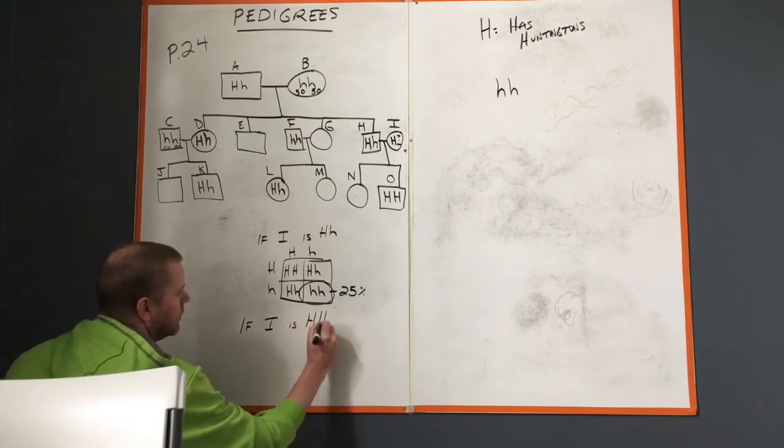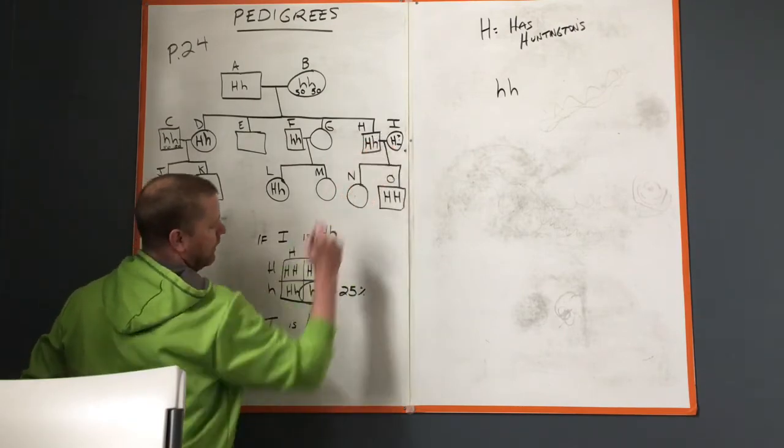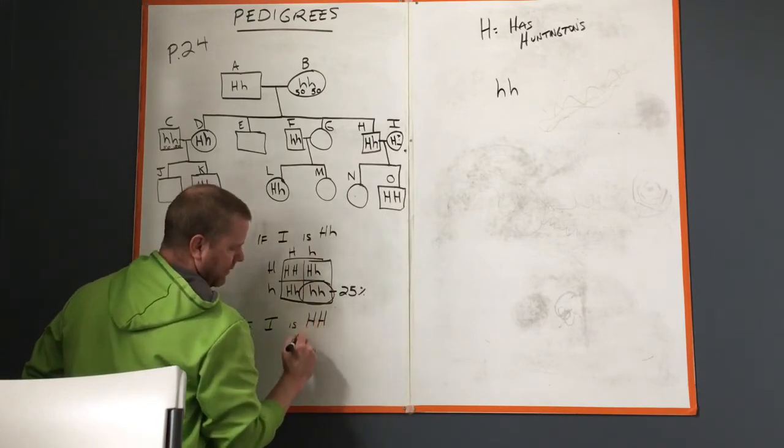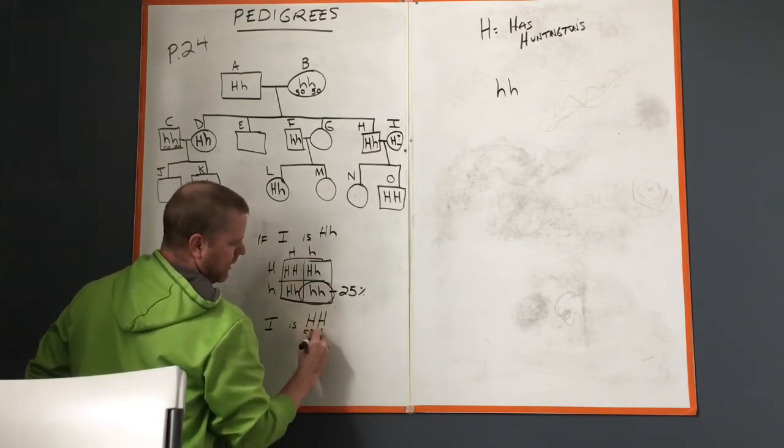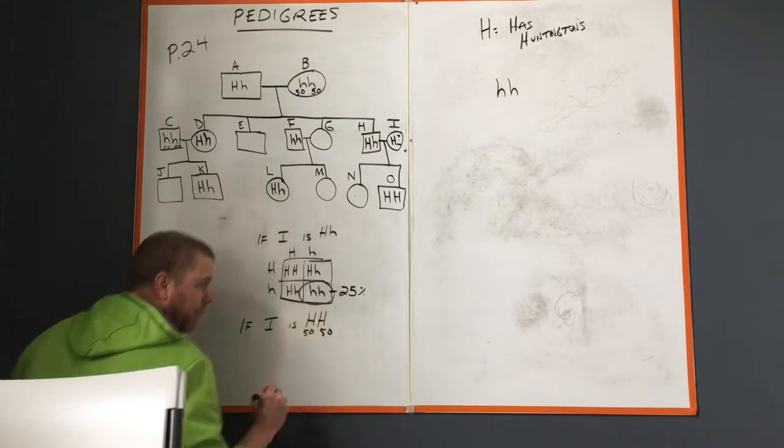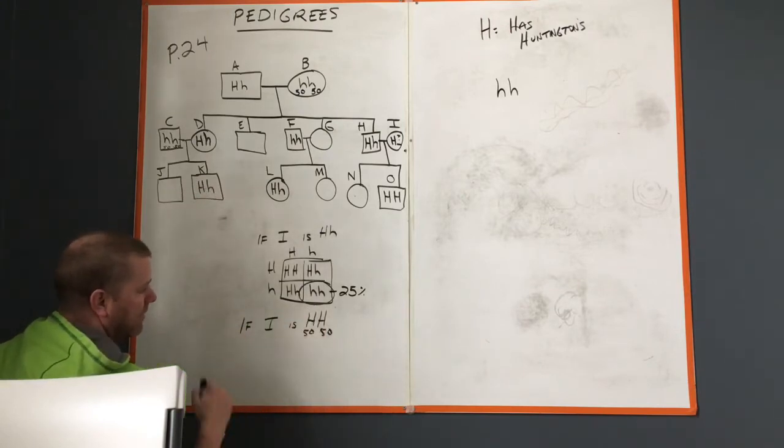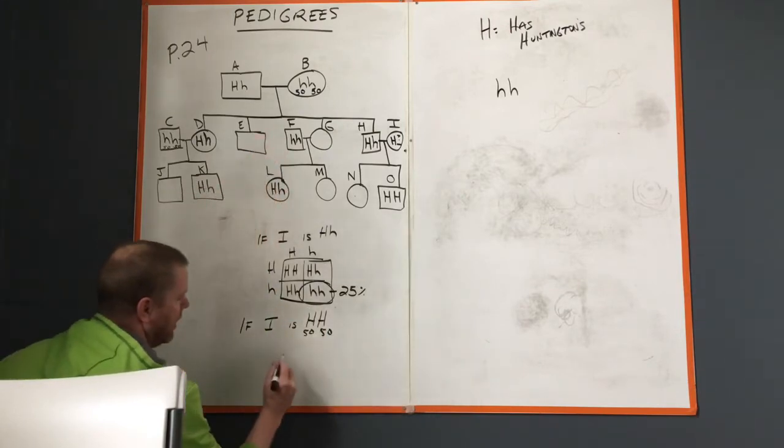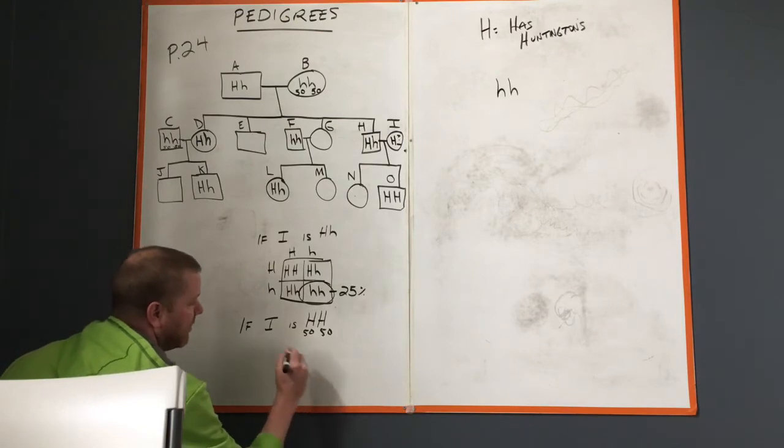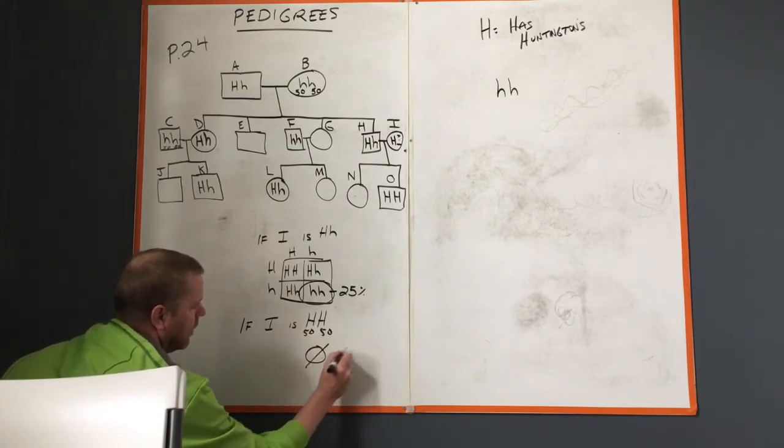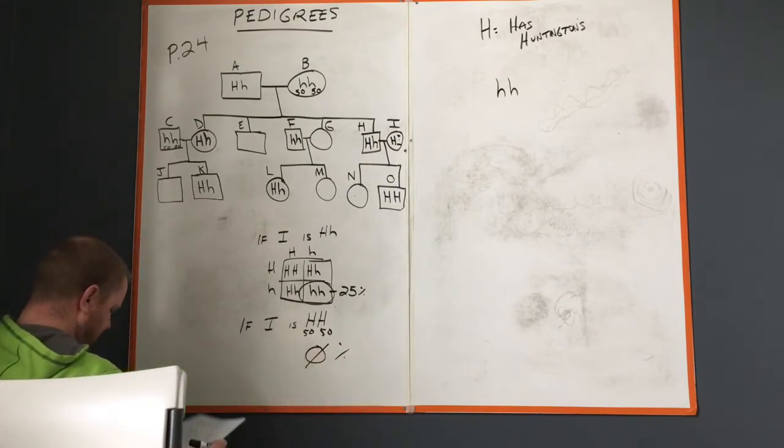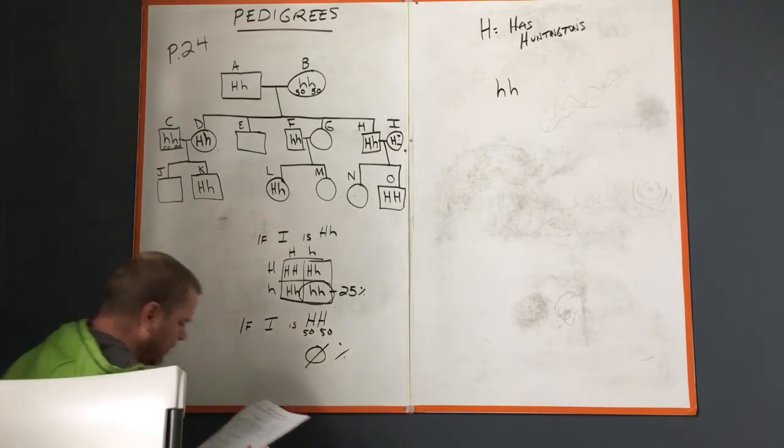However, if I is big H big H, so if this was big H little h crossed with big H big H, 50 percent of the time big H, 50 percent of the time big H. I don't even have to do the Punnett square. No matter what, the kid's gonna get a big H. Big H means Huntington's. What are the chances of not having Huntington's from a big H big H? Zero percent.